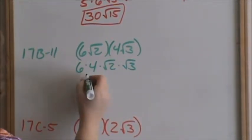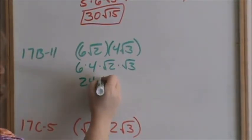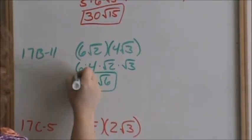Multiplying numbers to numbers, 6 times 4 is 24, square root of 2 times square root of 3, square root of 6, and that's your final answer.